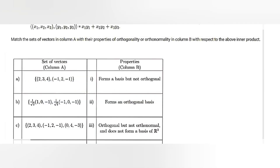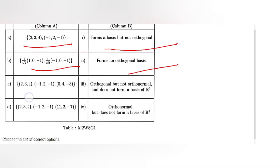The options in column B are: first, forms a basis but not orthogonal; second, forms an orthogonal basis; third, orthogonal but not orthonormal and does not form a basis of R3; and fourth, orthonormal but does not form a basis of R3.